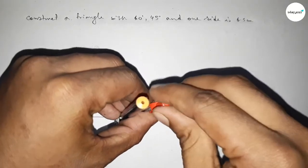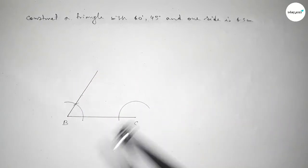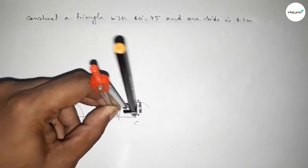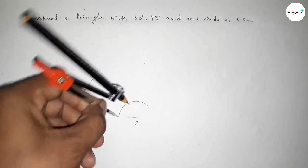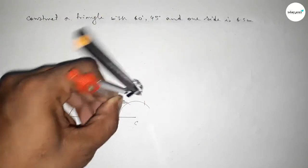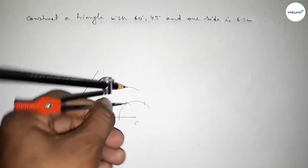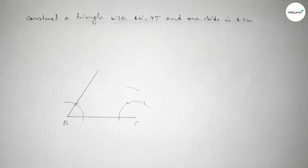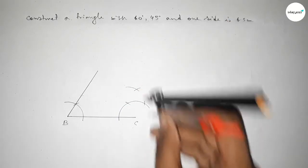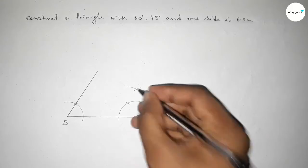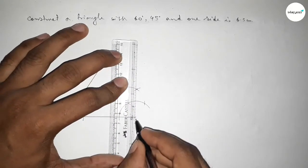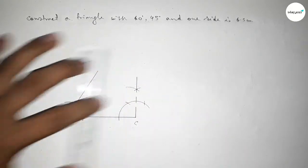Now drawing a 45 degree angle at point C. Putting the compass here and drawing an arc, then with the same length cutting here and here. Putting the compass again and cutting here, so both curves intersect at a point. Joining this to get a 90 degree angle.